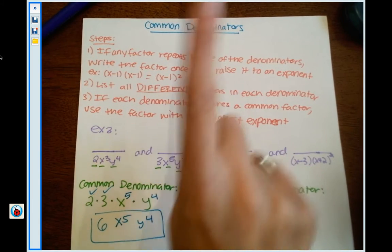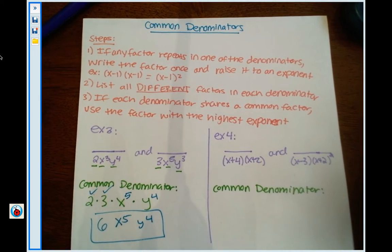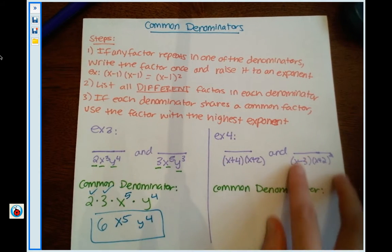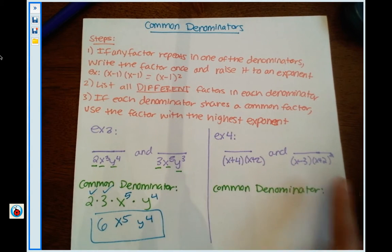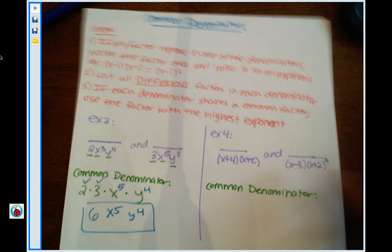It says if any factor repeats in one of the denominators, write the factor once and raise it to an exponent. I don't see any factors repeating here and I don't see any factors repeating here. Now this one was kind of already done for us.